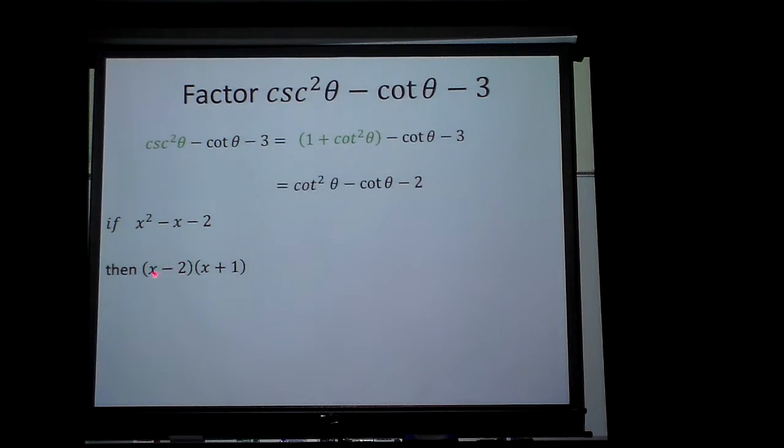So therefore, just replace the x with cotangent theta. We would have cotangent theta minus two times cotangent theta plus one. That's what this one would have factored to.